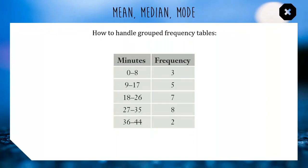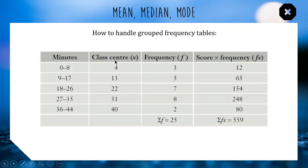Now let's touch on how we handle grouped frequency tables. Rather than having a different row for each score, we tabulate them into groups — more efficient, only five rows instead of 44. However, if you want to find the mean, you don't really know what scores are in each group. So we have to take the class center: zero to eight becomes four, nine to 17, the midpoint is 13. Not very exact, a little bit dodgy, but that's math sometimes. We then do frequency times class centers for our fx column, and find the mean as 559 divided by 25.